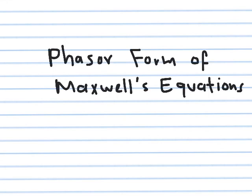In this video I will focus on the phasor form of Maxwell's equations. We can use this form if our fields are sinusoidal with respect to time — meaning you have only one frequency. So if you have an antenna with an excitation that creates only one frequency, you can simplify the analysis a lot by using phasors rather than time domain quantities.